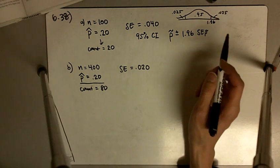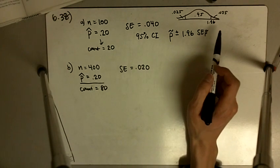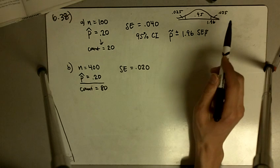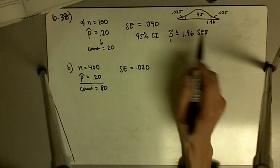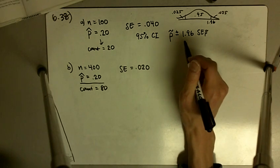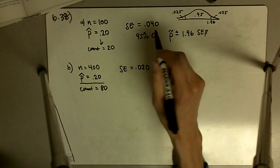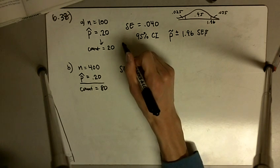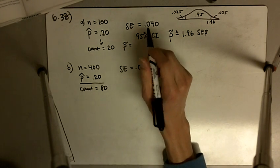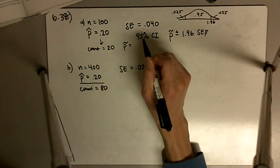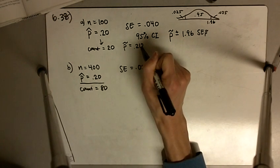Or you could look up for an infinity degrees of freedom, T 0.025. But anyway, we have P̂ from before. I should have written P̂ from before is 0.212.